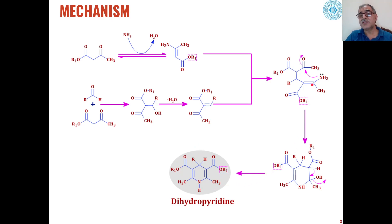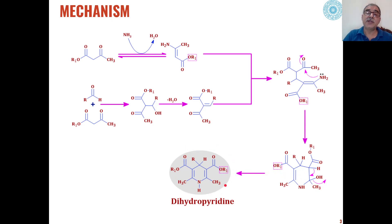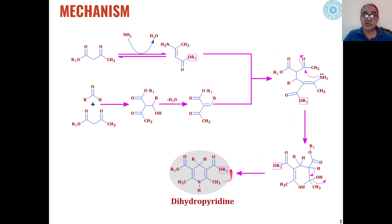These alpha-beta-unsaturated ketoesters then react with the enamine esters so that cyclization takes place. The enamine ester interacts with the unsaturated ketoester, and an intermediate is formed. Cyclization then occurs through nucleophilic attack of the amine onto the carbonyl system, forming a cyclic structure. Dehydration follows and we get dihydropyridine as the product. This is how beta-ketoesters, carbonyl compounds, and a nitrogen source condense in a multi-component reaction to give dihydropyridine.